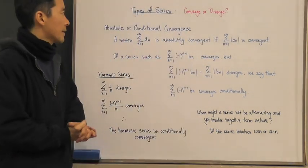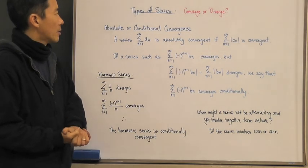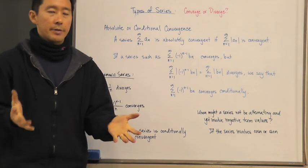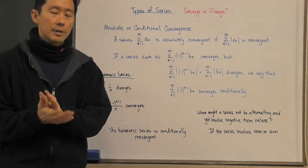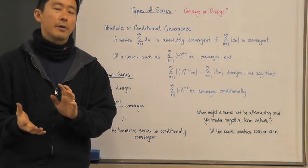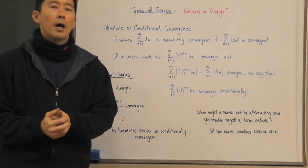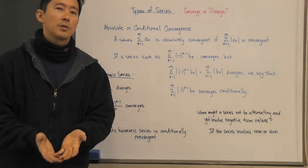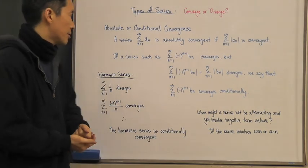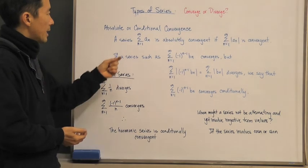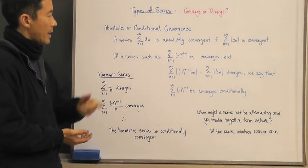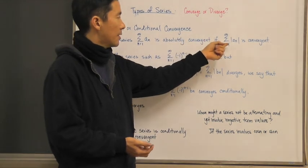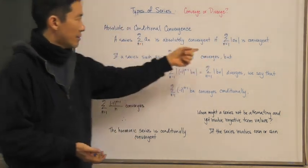Now let's look at what is called absolute or conditional convergence. We're talking about a series that is already considered to converge, but we need to make an additional qualification. We say that an infinite series a_n is absolutely convergent if the series of the absolute values of a_n is also convergent.